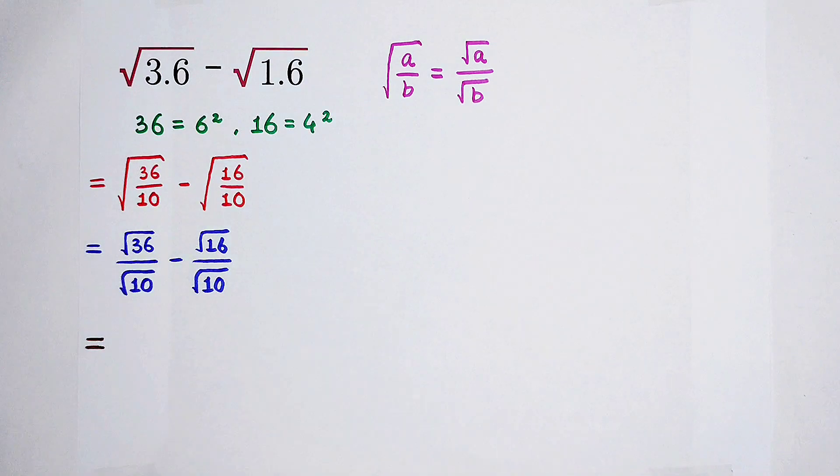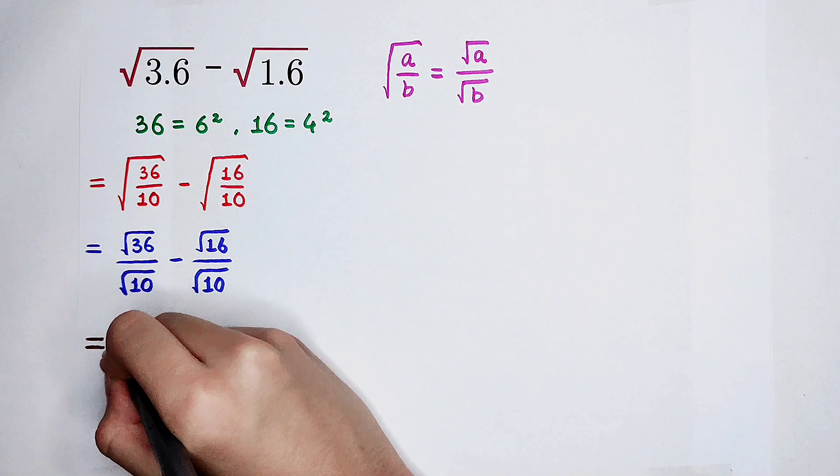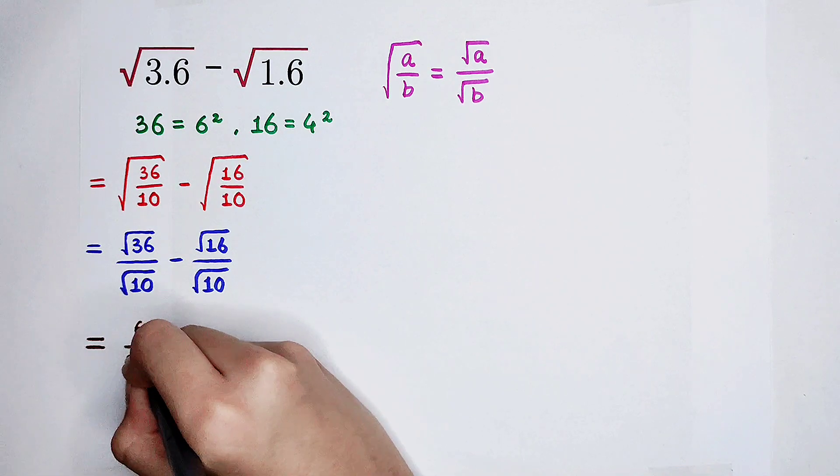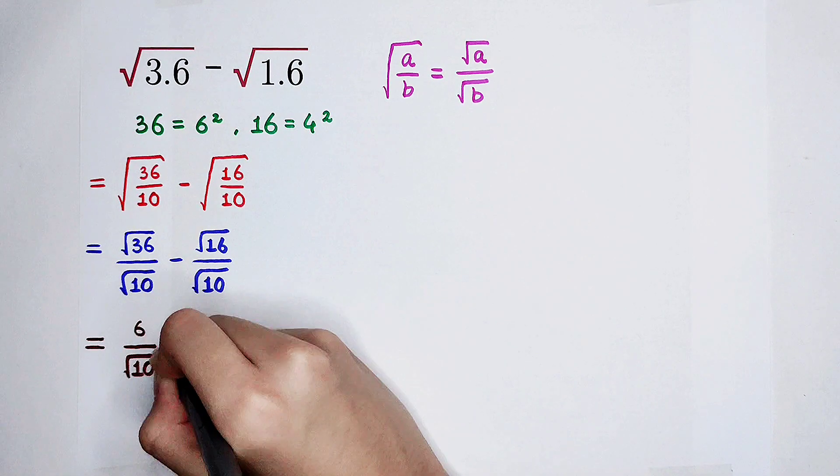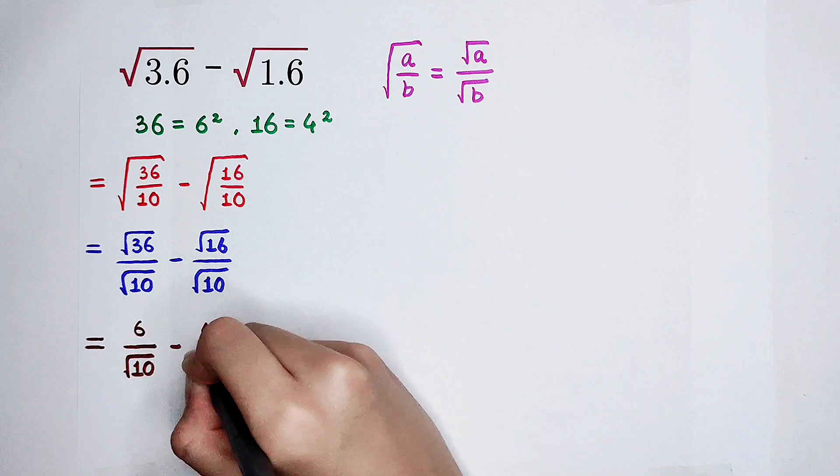Now, square root of 36 is 6, and the denominators have the same value. This is 4.